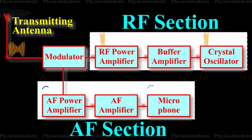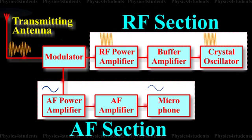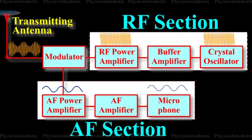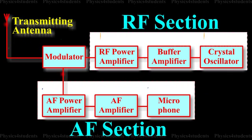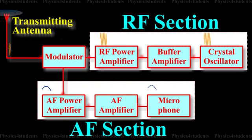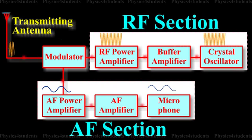In the modulator, the RF wave and modulating AF signal are mixed to produce the amplitude modulated wave. The output of this section is fed to the antenna for transmission.